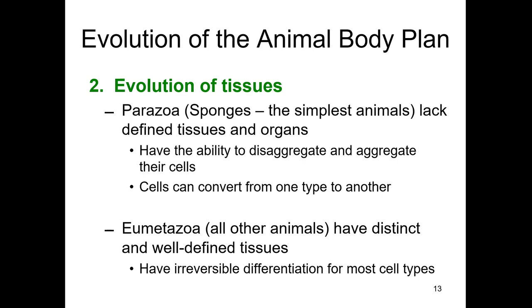Tissues are defined as groups of cells of the same type working together. In the morula embryo there are no tissues. In the blastula embryo there are no tissues. Only in the gastrula embryo do you first have tissues — we called those the germ layers, the first true tissues of the animal. The Parazoa, which are the sponges, do not have true tissues.